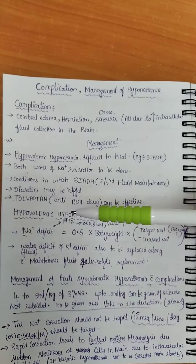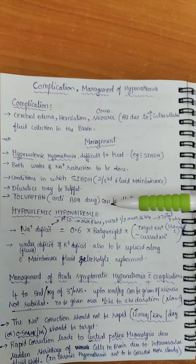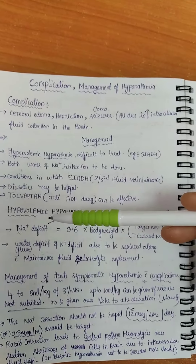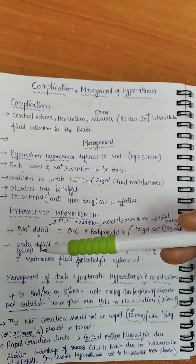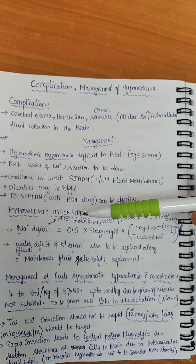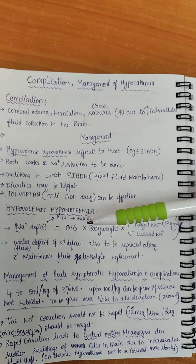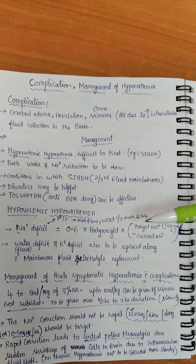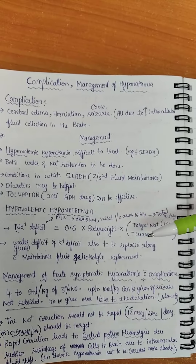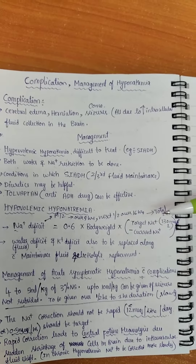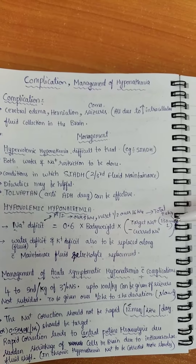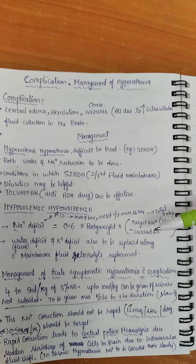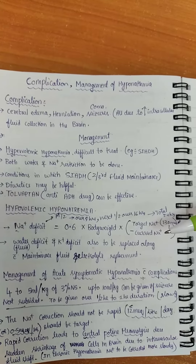If we come to management of hypovolemic hyponatremia, we should replace both sodium and water deficit. Sodium deficit can be calculated by the formula: 0.6 multiplied by body weight, multiplied by target sodium minus current sodium. Target sodium should be around 130 mEq per litre, and current sodium is the current recorded patient sodium level.